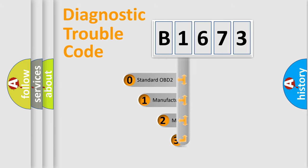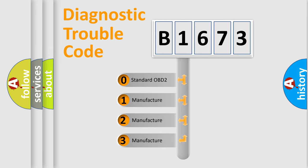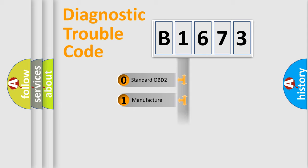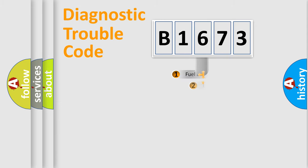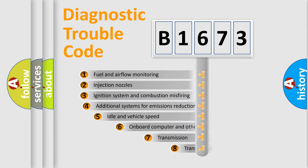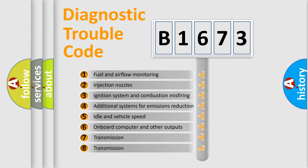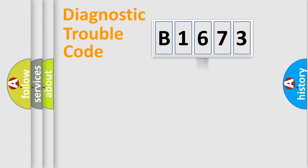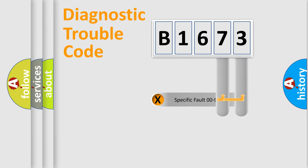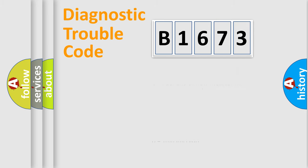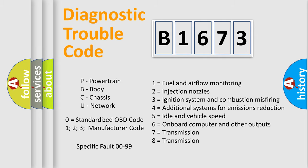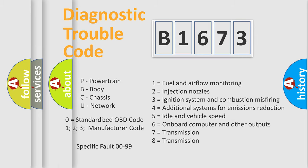This distribution is defined in the first character of the code. If the second character is expressed as zero, it is a standardized error. In the case of numbers 1, 2, or 3, it is a manufacturer-specific error. The third character specifies a subset of errors. This distribution is valid only for the standardized DTC code, and only if the second character is expressed by the number zero.